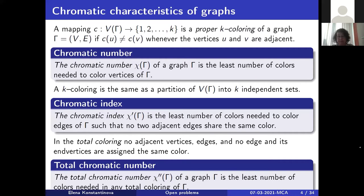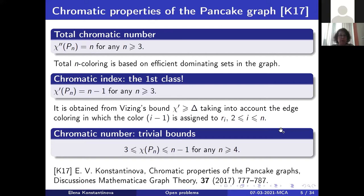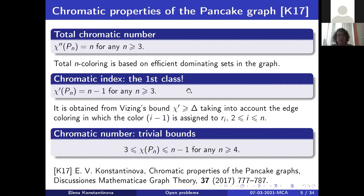Known results for the pancake graph: the total chromatic number is exactly n. Finding the total coloring is non-trivial; we showed an algorithm based on efficient dominating sets in the graph, which correspond to perfect codes in coding theory. As for chromatic index, it is also not difficult to show that for the pancake graph for any n at least three, the chromatic index equals n minus one — exactly the regularity of the graph — making it a class one graph.